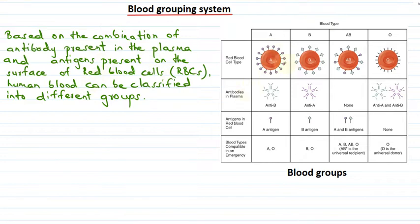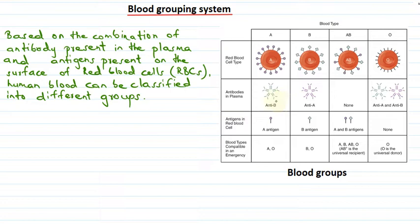Let's see what happens in the case of group A type of blood. In group A, the antibodies present in plasma are anti-B antibodies, and the type of antigen present on the red blood cells are A type of antigen. When the red blood cells have A antigen on their surface and the plasma has anti-B antibodies, it results in A blood group.